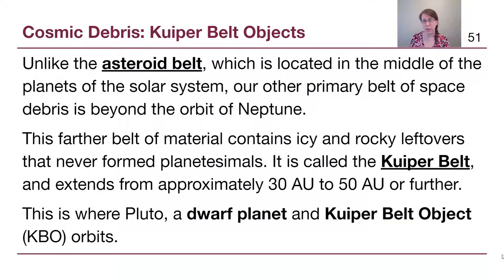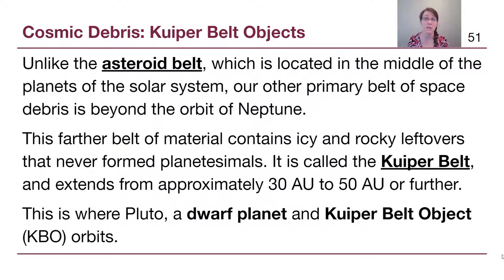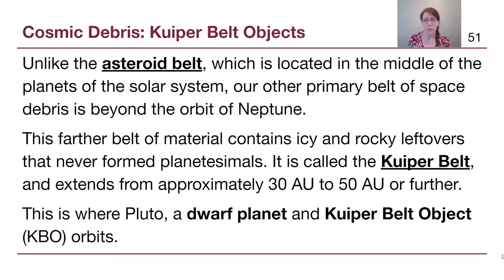Unlike the asteroid belt, which most people have heard of from K-12 science, the other primary source of cosmic debris doesn't often show up in K-12 science classes, and that's the Kuiper Belt. The asteroid belt is named after the type of object in it — asteroids. The Kuiper Belt is not; it is named after the scientist who discovered it.